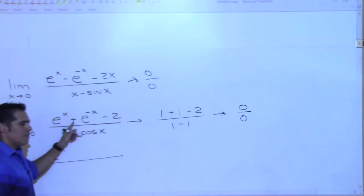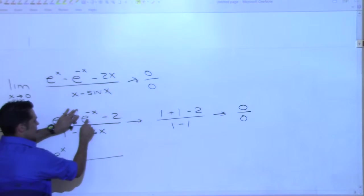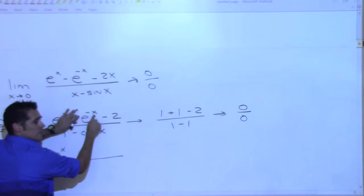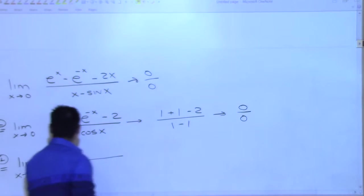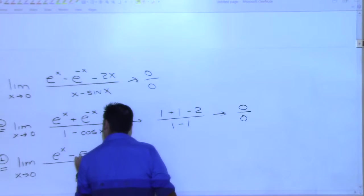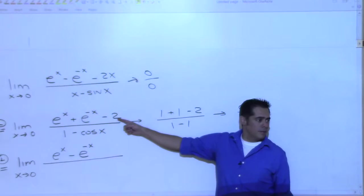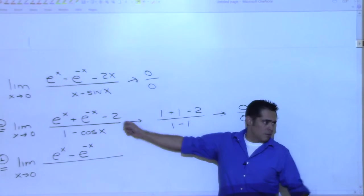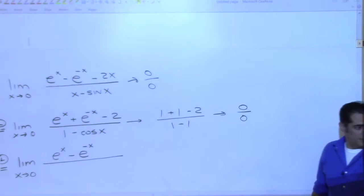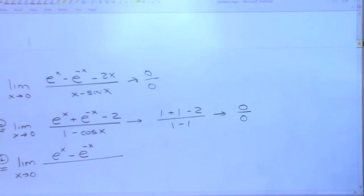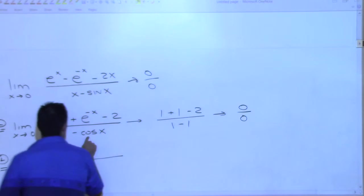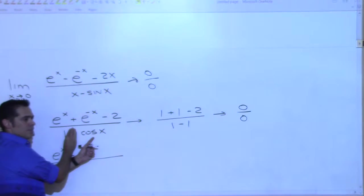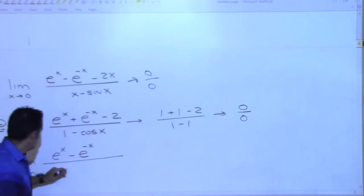Will it still be plus? Remember, derivative of e to the negative x is itself times the derivative of the exponent, which is negative one. So that negative one comes out and changes it — minus e to the negative x. And then the derivative of that constant term is zero, so that's it on top. The derivative of the bottom: one minus cosine x. The derivative of negative cosine x is minus sine x, but minus times minus is plus, so we get sine x.